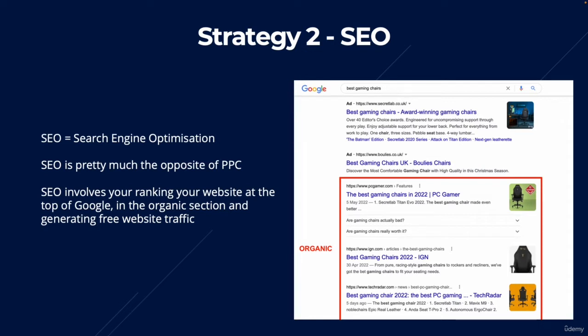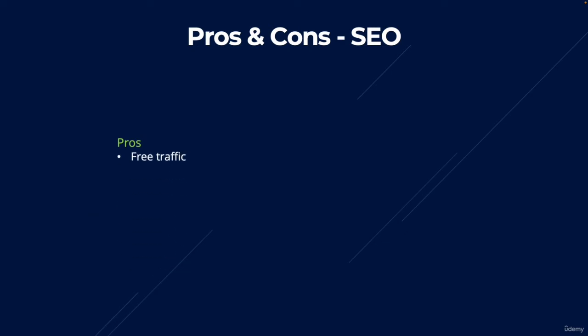A lot of people have more trust for websites in the organic section because they understand those sites aren't paying to be there. When you appear in the organic SEO section, you do not pay for any clicks. The pros of SEO are that it is free, targeted traffic. You can optimize your website to only appear for specific search terms related to your niche. SEO is also sustainable — unlike Google Ads, your website won't completely disappear the moment you stop. SEO results are long-lasting and compound over time.